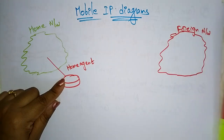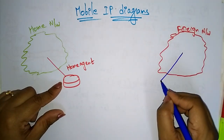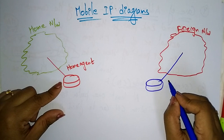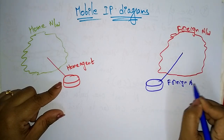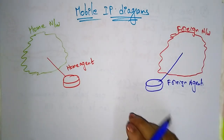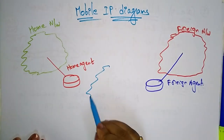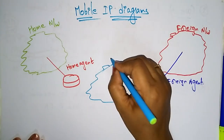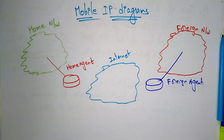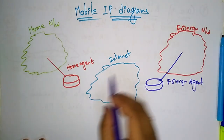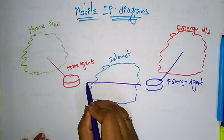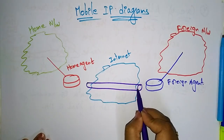The foreign network is also having one router — that is the foreign agent — which maintains the current location of the mobile node. In between we are having the internet, and in the internet you are having a tunnel. This tunnel is used to pass your datagram.